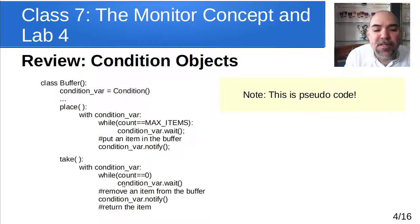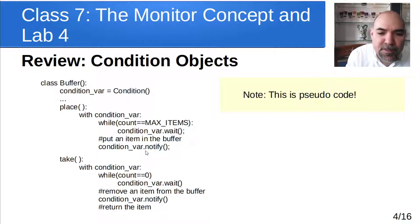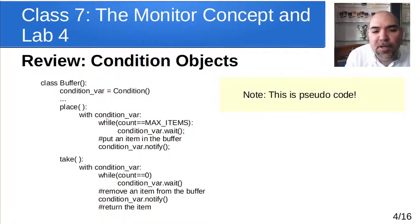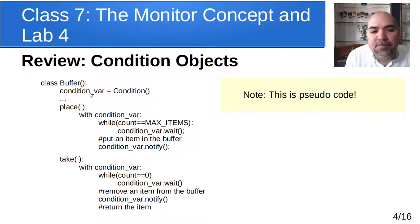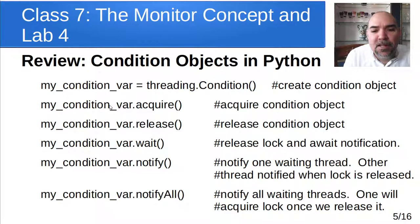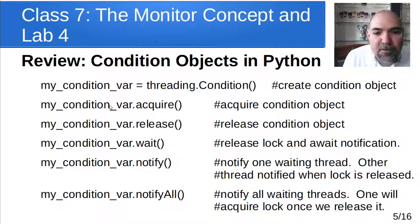The same thing over here — the condition can wait on when the buffer becomes empty, and then we can be notified when something gets put in the buffer. So you could also have multiple condition variables: a condition for full and a condition for empty, which can be useful. Now, how do we do that in Python? We looked at that, so this is review as well.